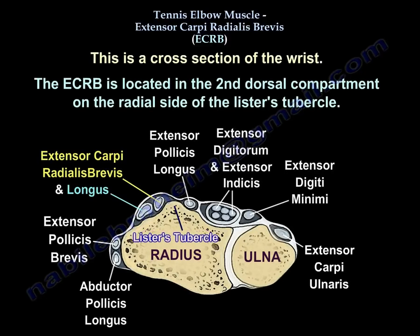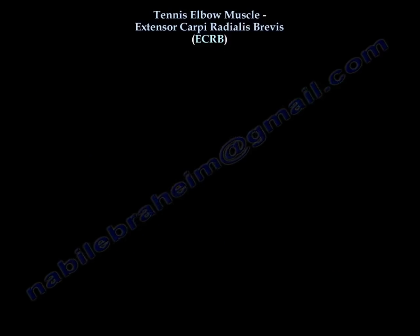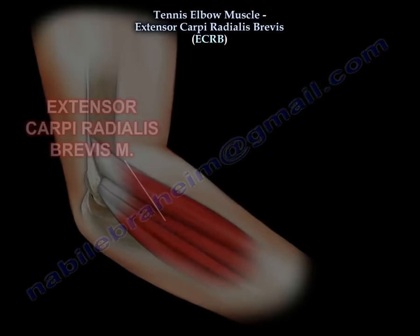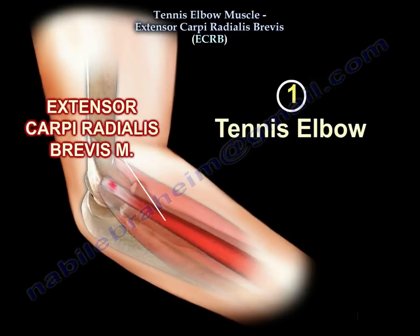The extensor carboidialis previs is located in the second dorsal compartment on the radial side of the listerous tubercle. There are several conditions associated with the extensor carboidialis previs. Number 1: tennis elbow.